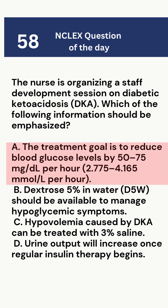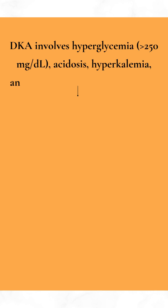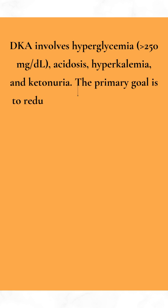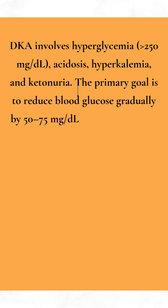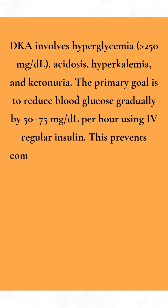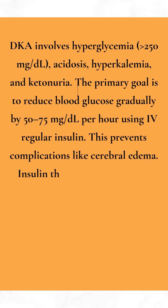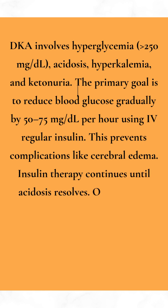Correct answer: A. Rationale: DKA involves hyperglycemia greater than 250 mg per deciliter, acidosis, hyperkalemia, and ketonuria. The primary goal is to reduce blood glucose gradually by 50 to 75 mg per deciliter per hour using intravenous regular insulin. This prevents complications like cerebral edema. Insulin therapy continues until acidosis resolves.